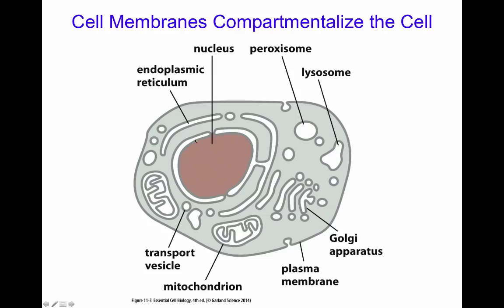Cell membranes in the eukaryotic cell allow for compartmentalization. The external cell membrane keeps the outer environment and the cytoplasmic environment separate. Membranes also form very different compartments within the eukaryotic cell, such as the nucleus, peroxisomes, lysosomes, the Golgi apparatus, the endoplasmic reticulum, vesicles for transport, and the mitochondria. Therefore, within the cell you can have multiple different environments independently controlled from the cytoplasm.